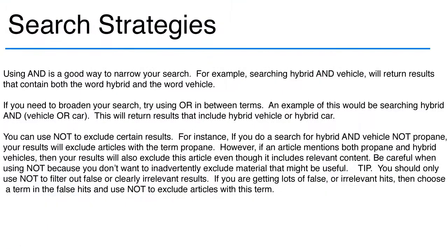Using AND is a good way to narrow your search. For example, searching hybrid AND vehicle will return results that contain both the word hybrid and the word vehicle. If you need to broaden your search, try using OR in between terms. An example of this would be searching hybrid AND vehicle OR car, which will return results that include hybrid vehicle or hybrid car.